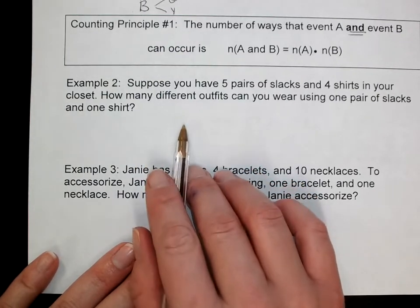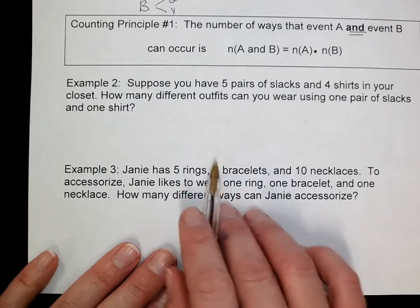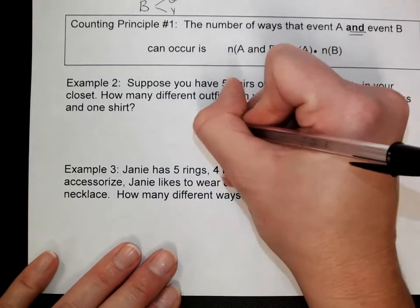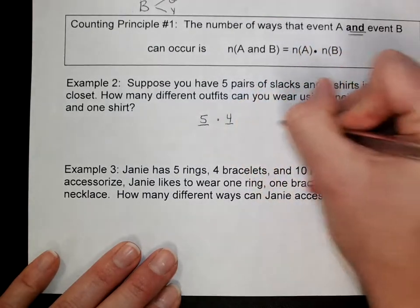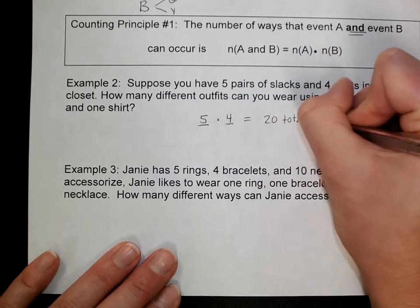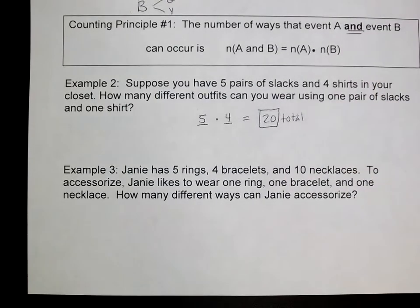We could draw our tree diagram. We would have five different slacks, and each of those would have four branches on them. Or five possibles of slacks times four possibles of shirts equals 20 total different outfits. One slack, one shirt.